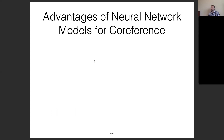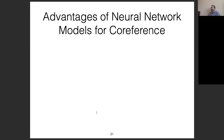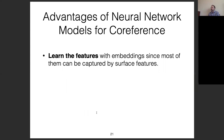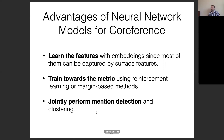These models have existed since at least 2005. One big advance of neural network models is that they make training more sophisticated methods easier. For example, devising cluster-level features was not trivial before, but with neural networks we can directly learn features with embeddings. Another advantage is we can train towards the metric using reinforcement learning or margin-based methods, and we can jointly perform mention detection and clustering.